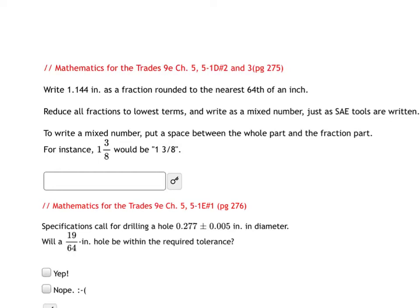In this video, we're going to spend a little time converting decimals to the nearest 64th of an inch or 32nd of an inch or 16th of an inch. So I have 1.144 inches.